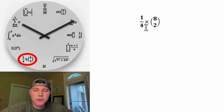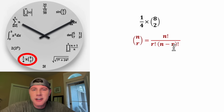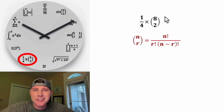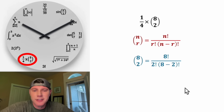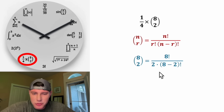Now let's do the next one. This is 1 fourth times a combination symbol. It's asking how many different ways can we select 2 objects from 8 objects if the order doesn't matter. The formula is n factorial over r factorial times the quantity n minus r factorial. So to evaluate 8 choose 2, we plug in 8 factorial over 2 factorial times the quantity 8 minus 2 factorial. Once we figure this out, we'll multiply by 1 fourth. 2 factorial is just 2.